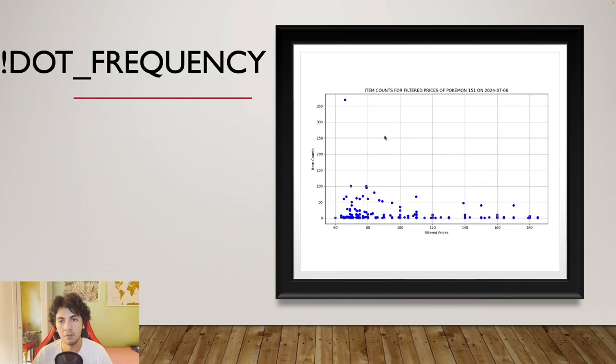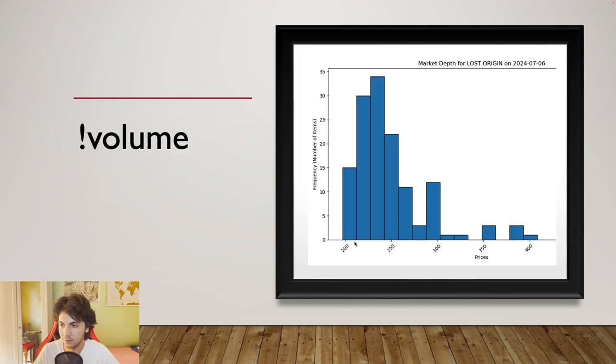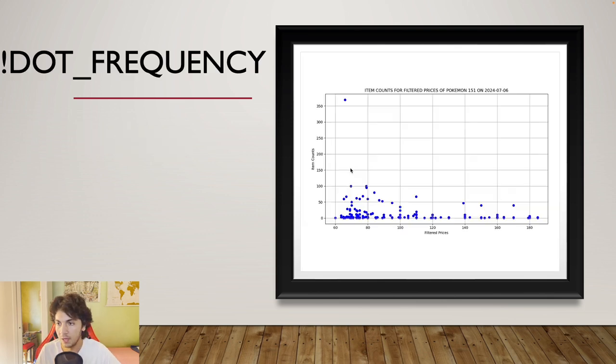Command number two, dot frequency. What does it do? Well, in the previous command, you had volume. It was basically taking a bracket, an interval in price, and it was telling you how many of that product, what was the supply for that interval. So again, Lost Origin 200 to 210, you had 15 number of boxes in that interval listed for that interval. This is taking it to a step further.